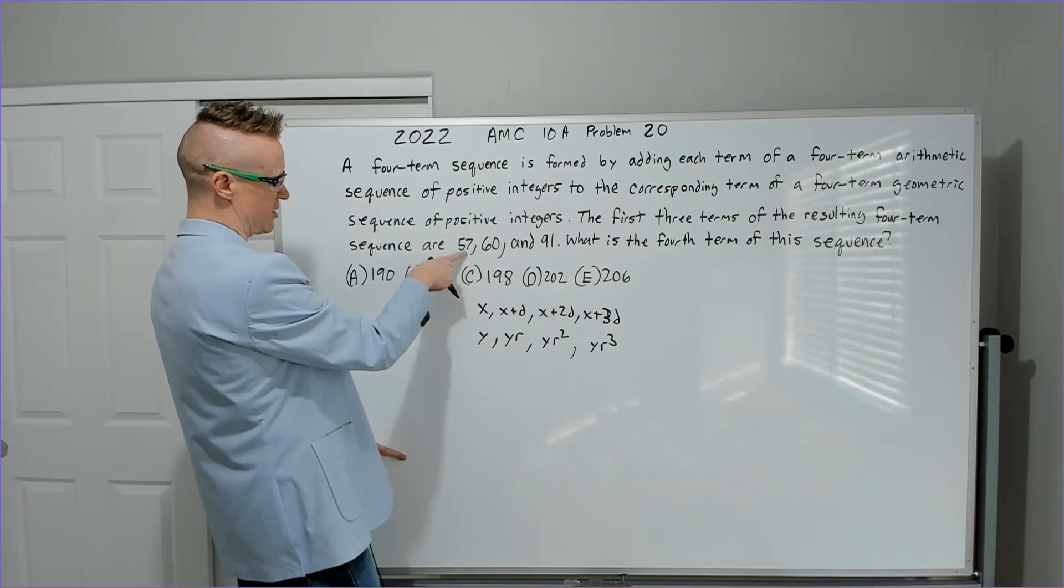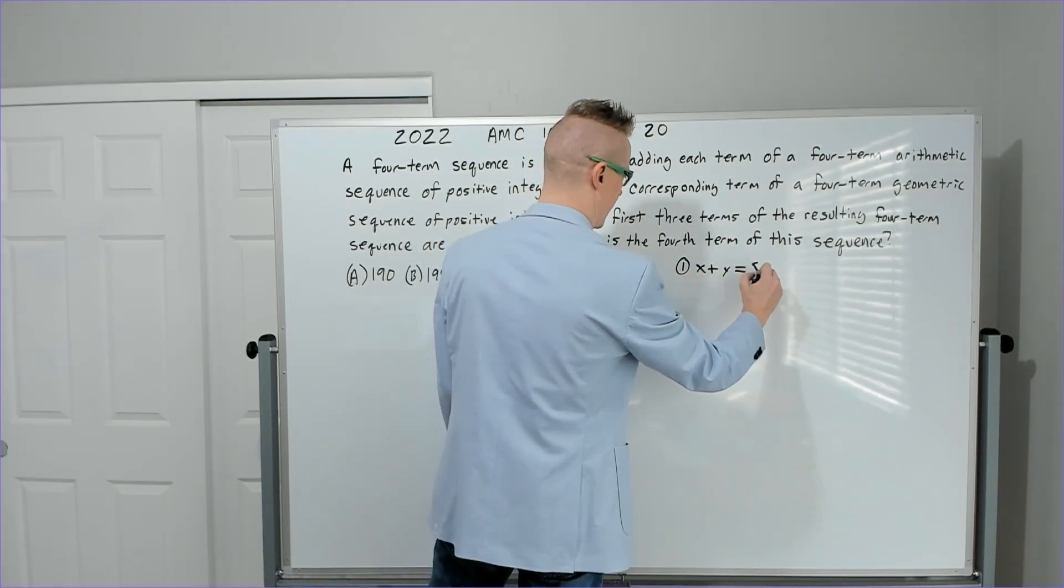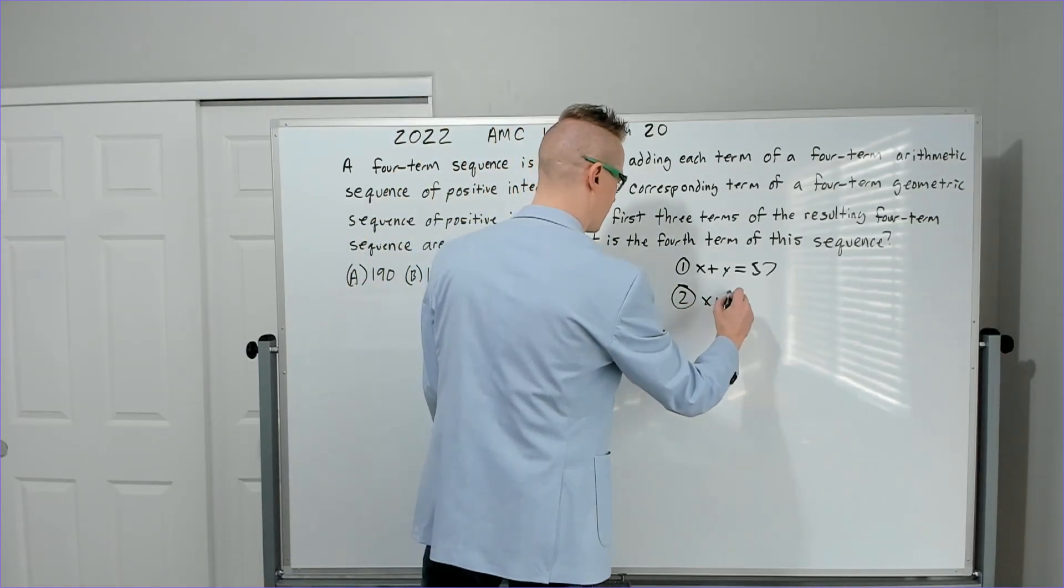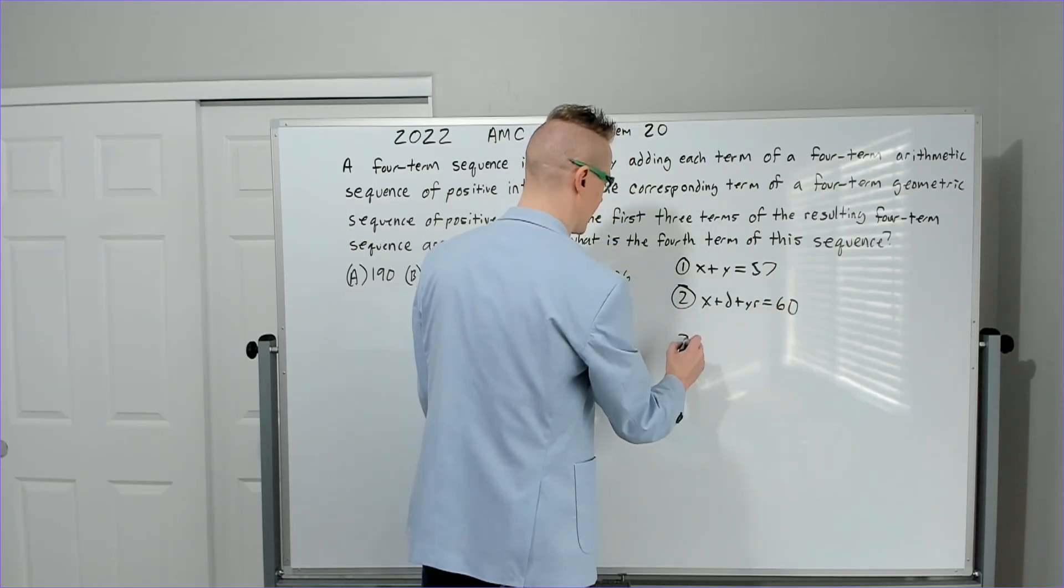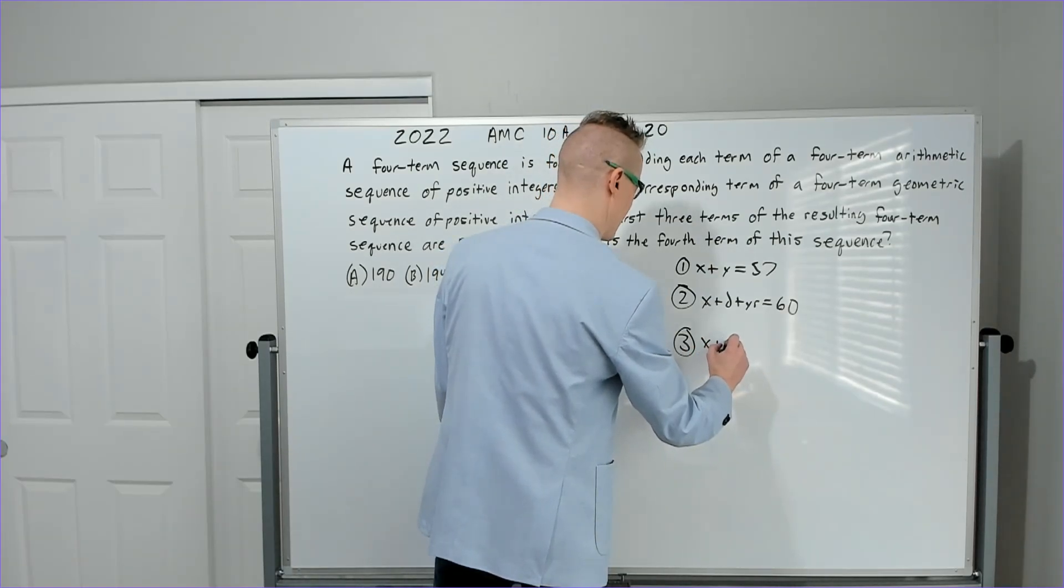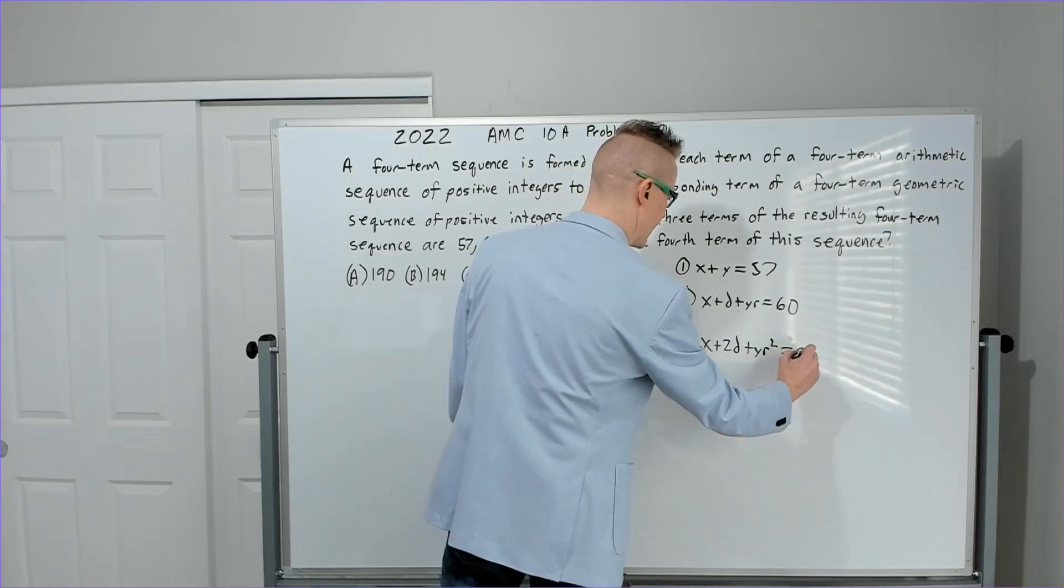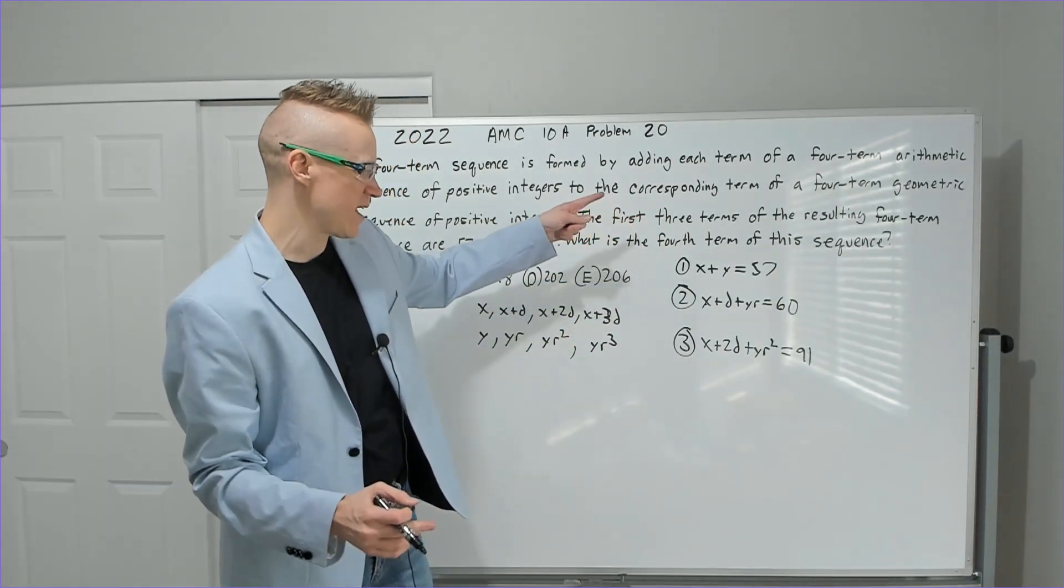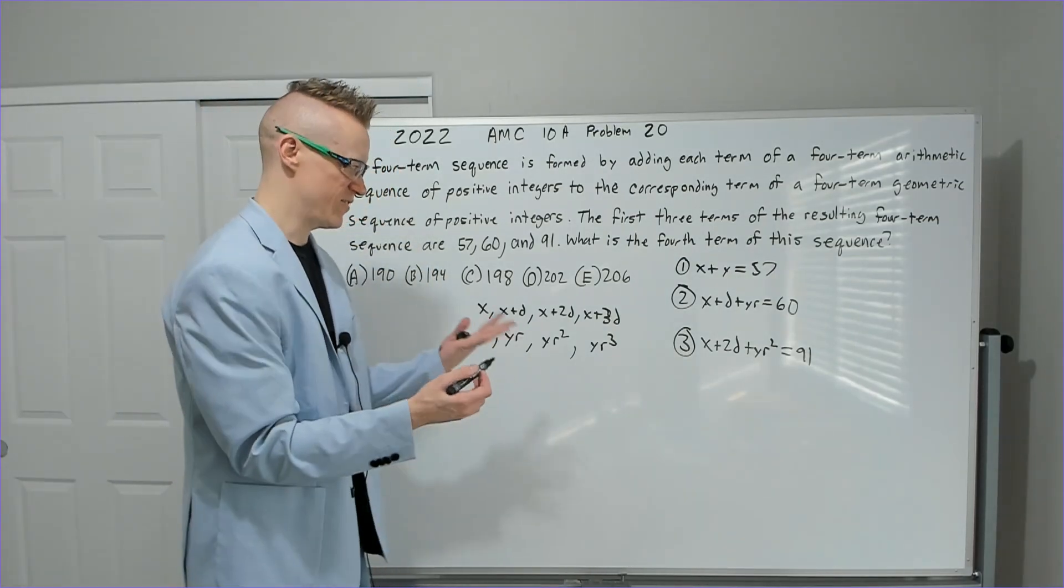X plus Y, the sum of these two must be 57. So I'll call this equation one: X plus Y equals 57. Equation two is going to be X plus D plus YR, and it needs to equal 60. And equation three will be X plus 2D plus YR squared, and it needs to equal 91. At this point, you have three equations and four unknowns, but maybe we can figure some stuff out.